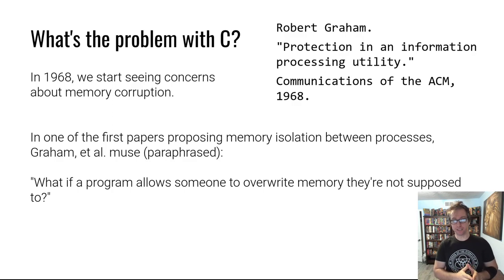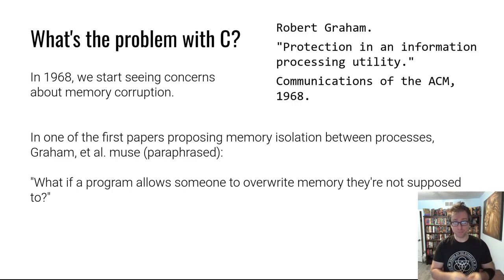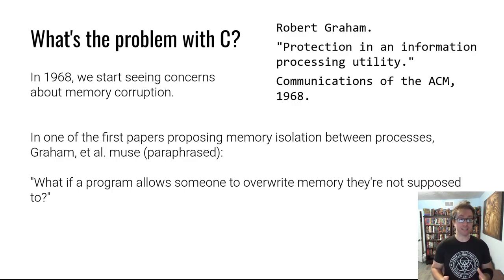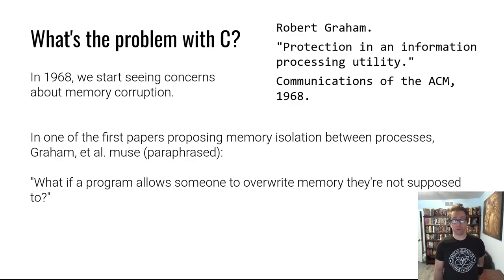So we have to deal with problems in C. These problems are multifold, but they basically stem from the fact that C doesn't hold your hand - C allows you to make mistakes. We'll go into the problems themselves at a high level in the next video. Problems with C have been known for a very long time. Actually, problems with these low-level computer languages have been known since the late 60s. Robert Graham in a 1968 paper about the concept of memory protection in computing said that if a program allows someone to override memory they're not supposed to, this might be very bad. C allows exactly that and more.